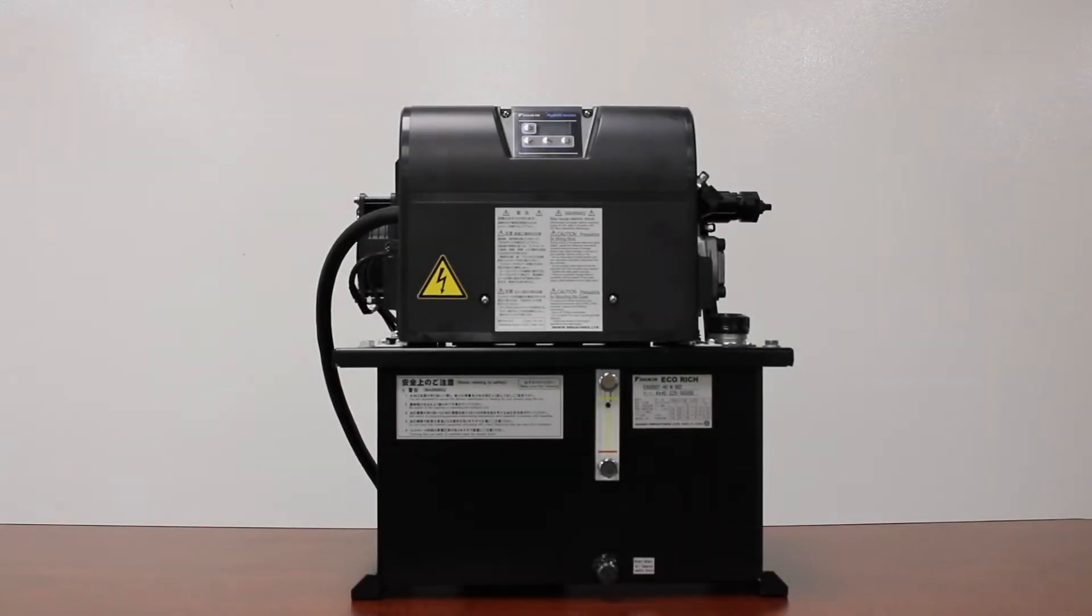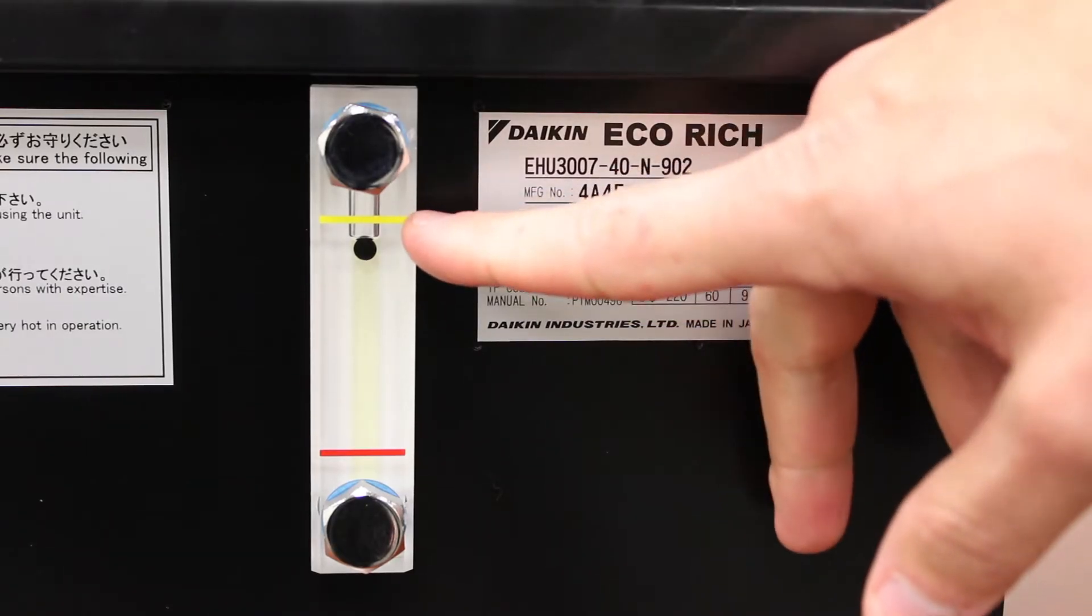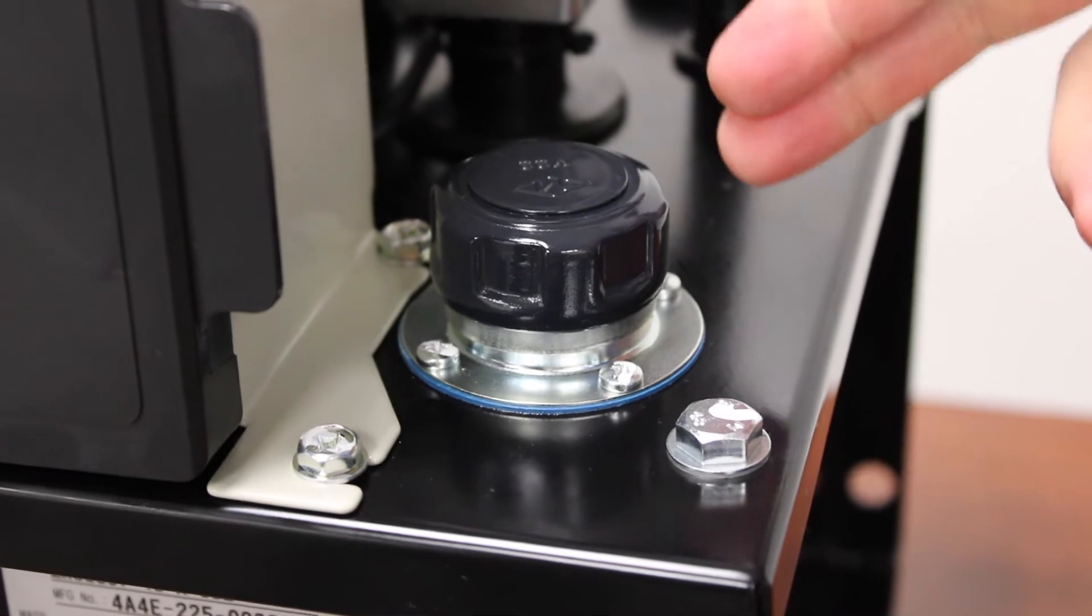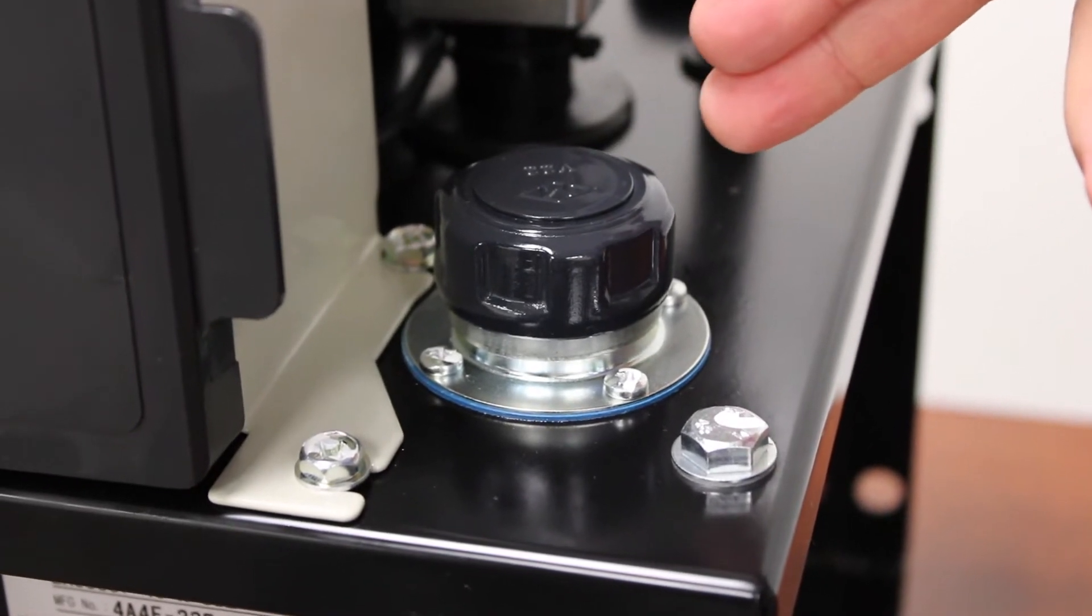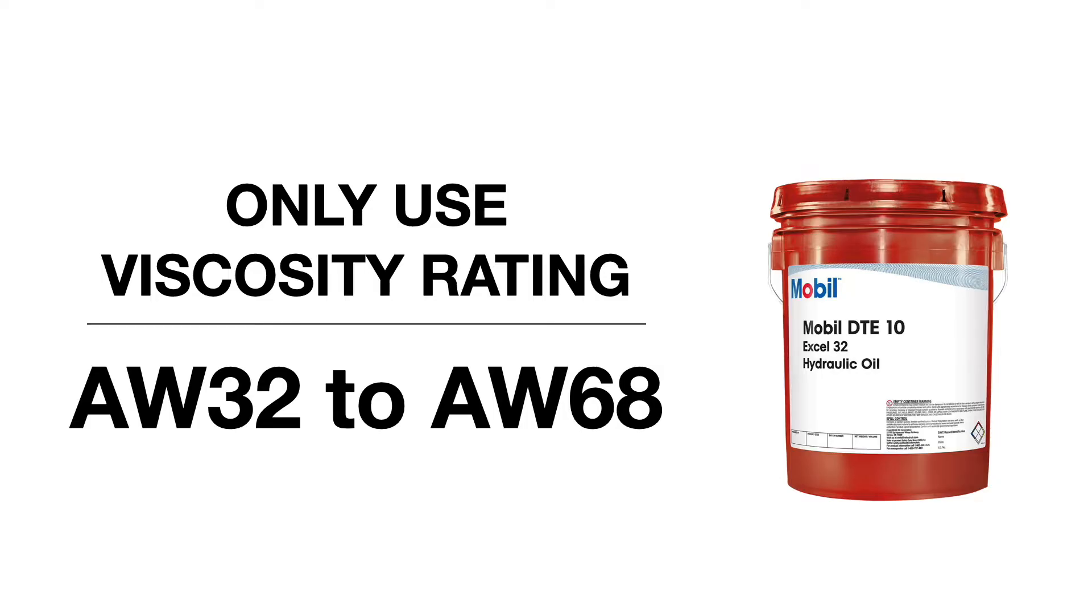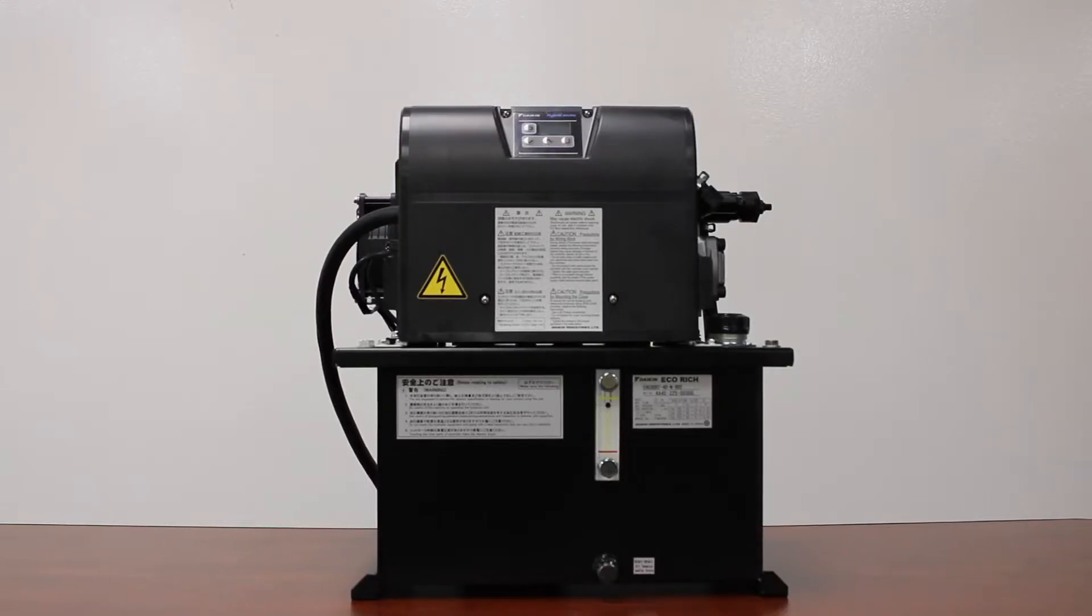To start off out of the box, you're going to want to fill the tank with oil. We can fill it up to here on the sight gauge. Your fill cap for the tank is right here on the front right corner. Any weight oil from an AW32 to an AW68 is acceptable.